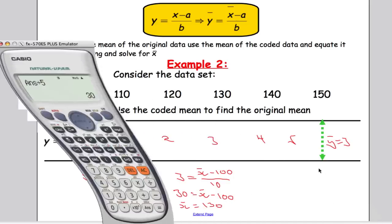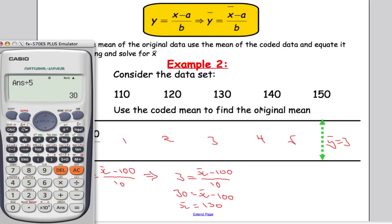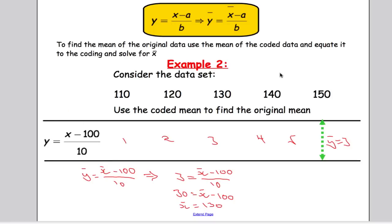Let's just confirm our answer by checking the mean of the original data set. 110 plus 120 plus 130 plus 140 plus 150, adding them all together, and then divide that by 5, and we'll see that x bar is indeed 130.